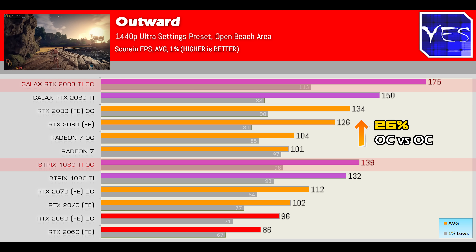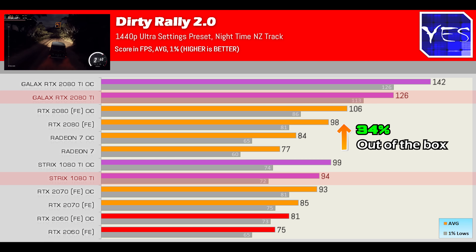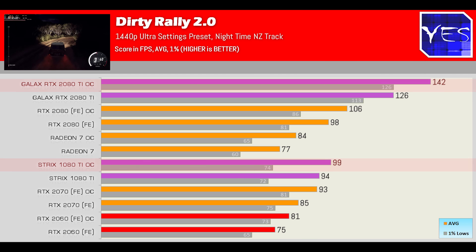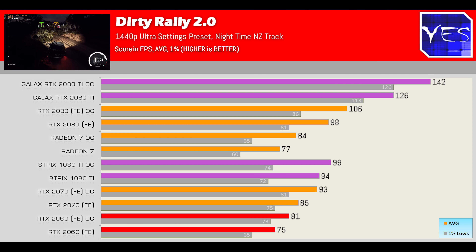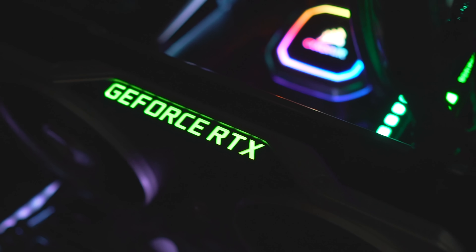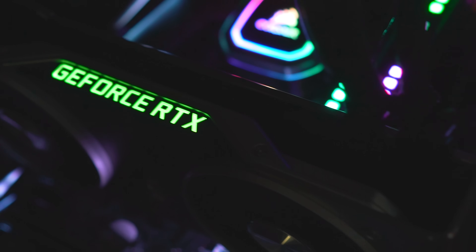Dirt Rally 2.0 showed a 34% boost stock versus stock, and 43% OC'd versus OC'd — the biggest difference of all the games tested. Being a recent release title, it showcases what the 2080 Ti can do when games are optimized for the architecture. It's worth noting we're comparing two different architectures here: Pascal on the 1080 Ti and Turing on the 2080 Ti.